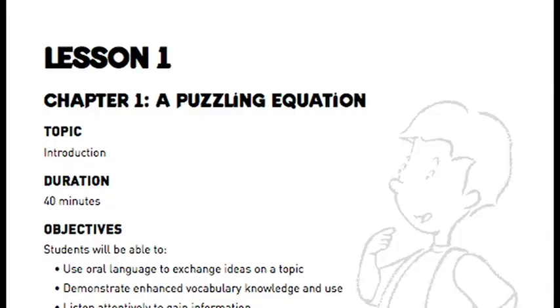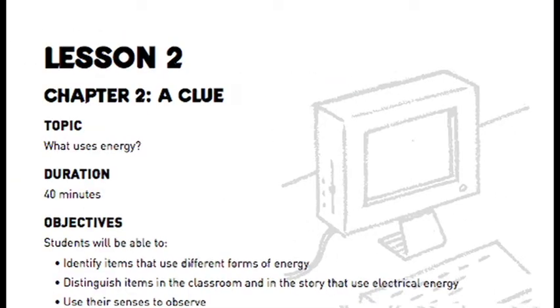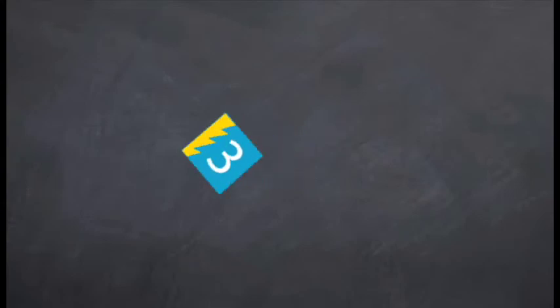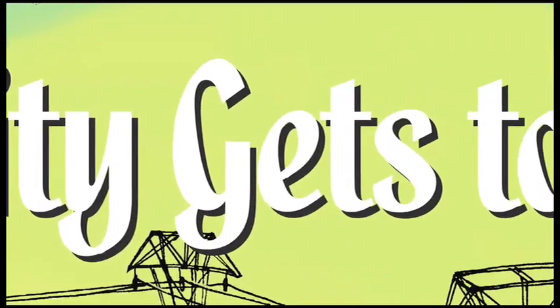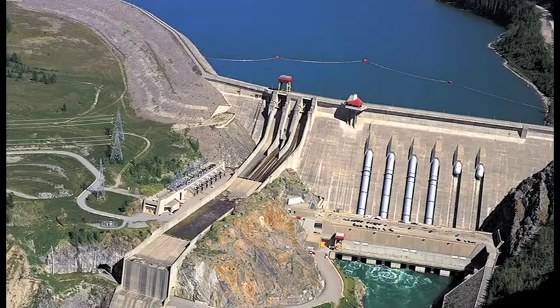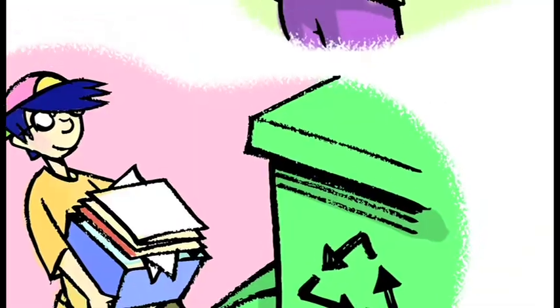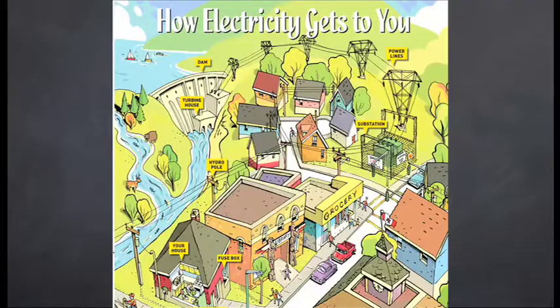The Energy Detectives program features 10 lessons averaging 50 minutes in length. Lesson 3, for example, How Electricity Gets to You, enables the students to understand the generation, transmission, and use of electricity and is supported by the electricity poster.